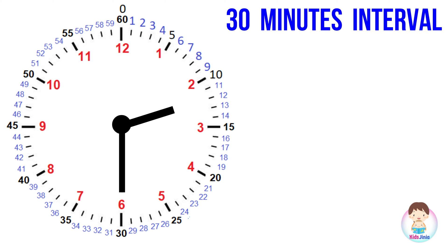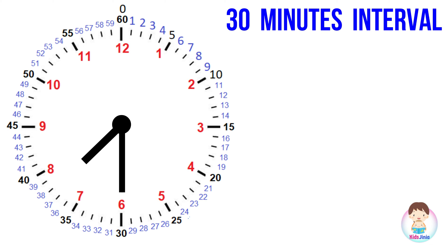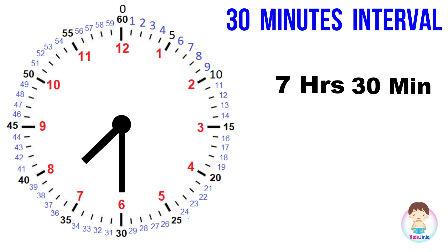Our next step is to read the time in 30-minute intervals. In this clock, the minute hand points at 6 — that means it is pointing at the 30th mark, which represents 30 minutes. The hour hand is pointing between 2 and 3, which shows the hour hand has crossed 2 but did not reach 3, so we take it as 2 hours 30 minutes — in mathematical notation: 2:30. In another example, the minute hand points at 6 — that means 30 minutes — and the hour hand points between 7 and 8, so the time is 7:30.